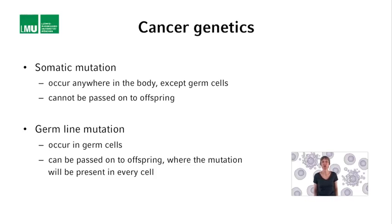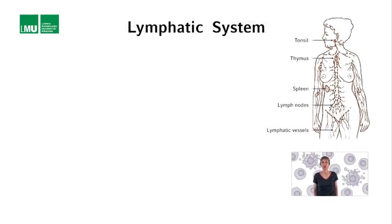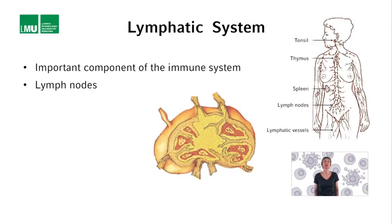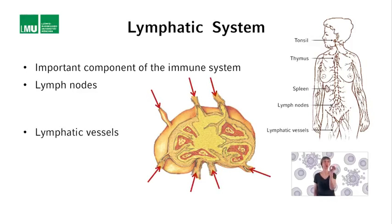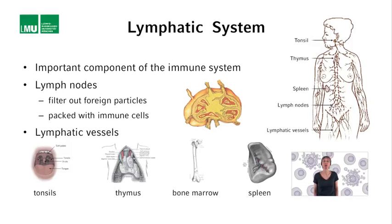One type of cancer for which this was done is follicular lymphoma. The lymphatic system is an important component of our immune system. It is composed of lymph nodes connected to lymphatic vessels. Lymph nodes are small, oval-shaped organs found throughout the body. Their function is to filter out foreign particles such as bacteria and viruses, and they are packed with immune cells such as B cells and T cells. Also part of the lymphatic system are organs such as the tonsils, the thymus, the bone marrow, and the spleen.